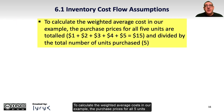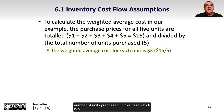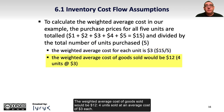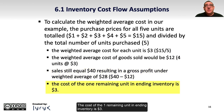To calculate the weighted average cost in our example, the purchase prices for all 5 units are totaled and equal $15 — 1 plus 2 plus 3 plus 4 plus 5 — and then divided by the total number of units purchased, which is 5. Therefore the weighted average cost for each unit is $3, or $15 divided by 5. The weighted average cost of goods sold would be $12 — 4 units sold at an average cost of $3 each. Sales are still $40, resulting in a gross profit under weighted average of $28, or $40 minus the $12 cost. The cost of the one remaining unit in inventory is $3.